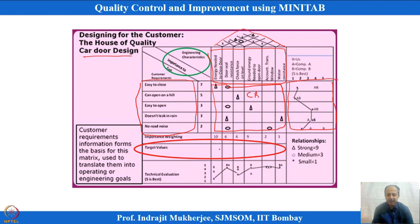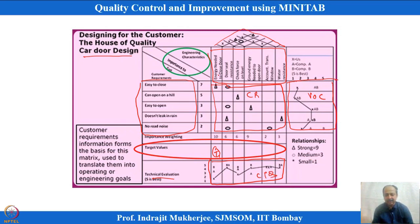Target values for each CTQ are set and shown here, and the technical evaluation box shows where we stand compared to competitors on CTQs. The correlation matrix shows the relationship between any voice of the customer and any CTQ.